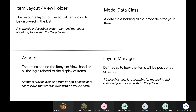The first thing we'll be creating is the item layout and its accompanying ViewHolder. The item layout is the resource layout of the actual item displayed in the list, whereas the ViewHolder is a class for our item layout which contains the metadata about the place and everything within the RecyclerView. Accompanying those is a model data class which holds the actual properties we'll be showing on screen. The next and most important thing is the adapter class — this is the brains behind the RecyclerView. It handles all the logic related to the display of items, binding of data, and how items are going to be displayed.